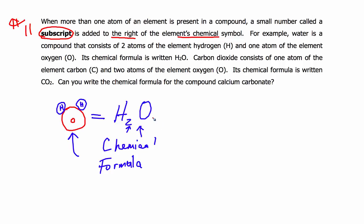There's no number to the right of the O. When there's no subscript written to the right of a symbol, it's understood to be a subscript of 1. So you could write the chemical formula H2O — perfectly understandable by any scientist — or you could write H2O1, which would also be understood. So the chemical formula for water is written H2O.